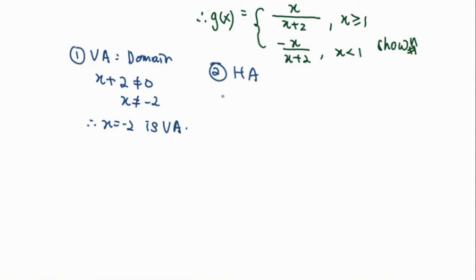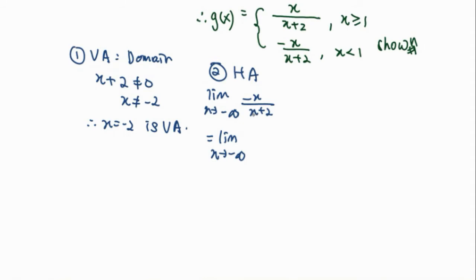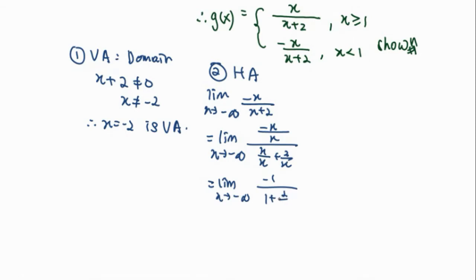For the horizontal asymptote, we need to calculate the limit as x approaches negative infinity for the function negative x over (x plus 2), because x is less than 1 when x approaches negative infinity. When we substitute negative infinity, we get an indeterminate form, so we need to simplify this function by dividing by the highest power of x, which is x to the power of 1. Now we substitute infinity again and we will get negative 1 over (1 plus 0), which equals negative 1.